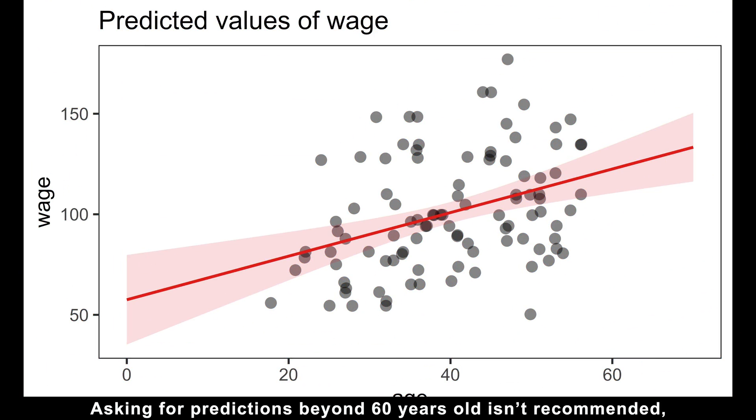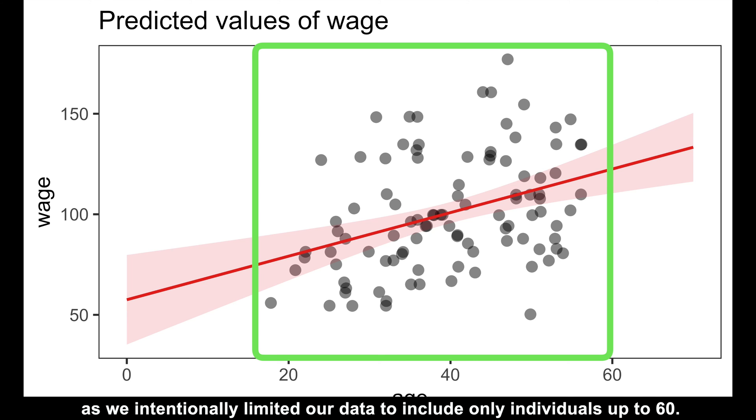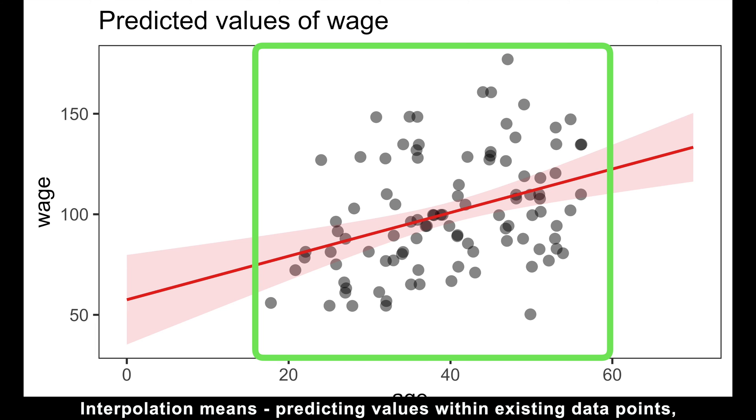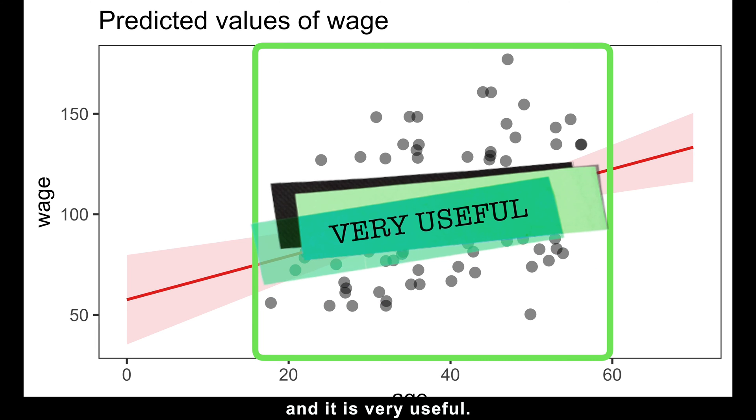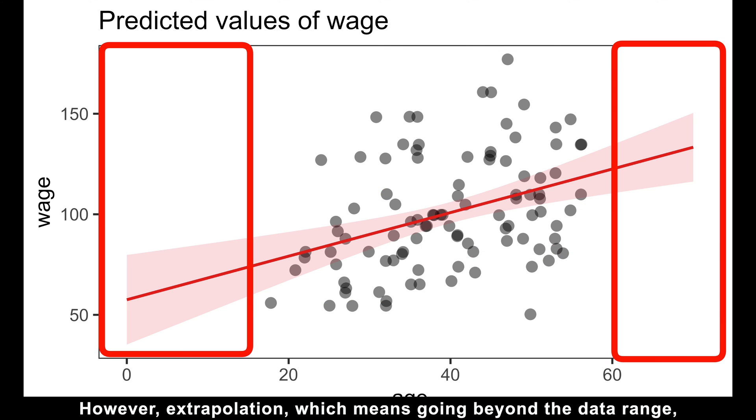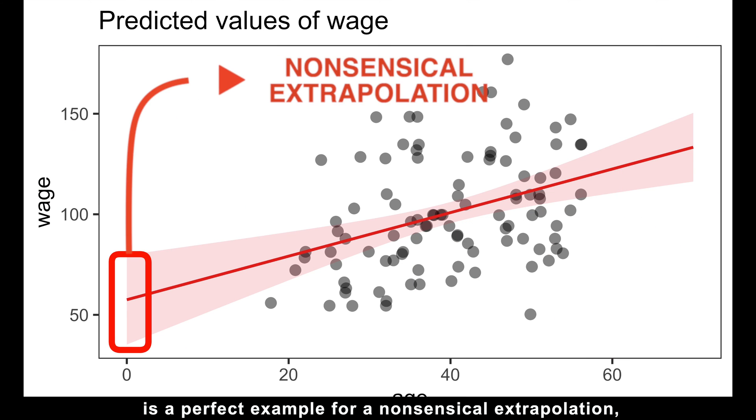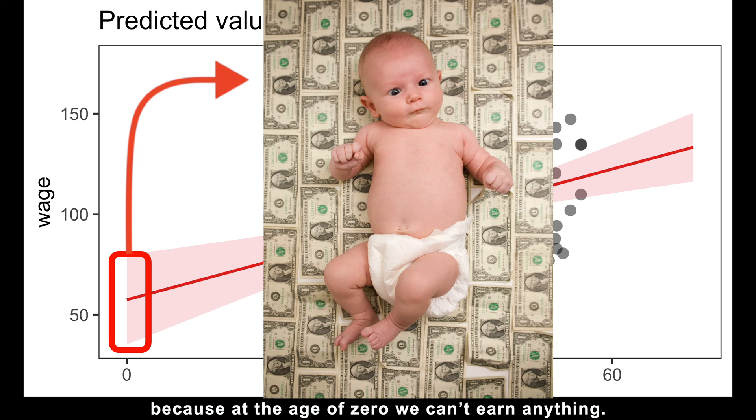Asking for predictions beyond 60 years old isn't recommended, as we intentionally limited our data to include only individuals up to 60 years old. Here, it's crucial to differentiate between interpolation and extrapolation. Interpolation means predicting values within existing data points, and it's very useful. However, extrapolation, which means going beyond the data range, is risky and unreliable. Predicting salary at birth is a perfect example of a nonsensical extrapolation, because at the age of zero, we can't earn anything.